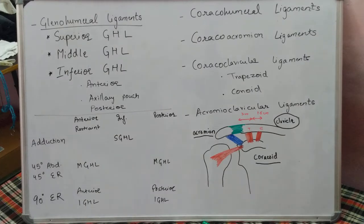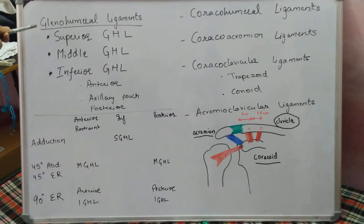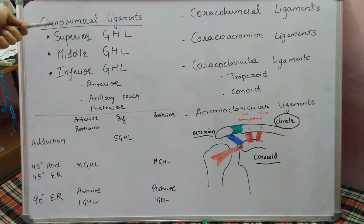In this video we will discuss the various ligaments surrounding the shoulder joint. Starting with the intracapsular ligaments, which are basically the glenohumeral ligaments. As the name indicates, they start from the glenoid and get attached to the humerus.